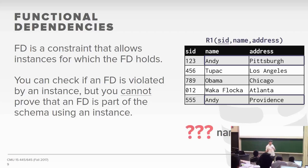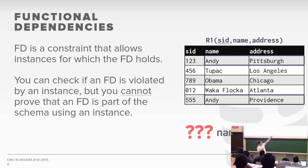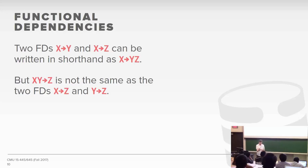There are some tricks for deriving additional functional dependencies. If X → Y and X → Z, you can write it as X → YZ by combining the right-hand side. But you can't split the left-hand side: if XY → Z, it's not correct to say X → Z or Y → Z individually, because you need the unique combination of X and Y together to imply Z. You can explode the right-hand side, but not the left-hand side.